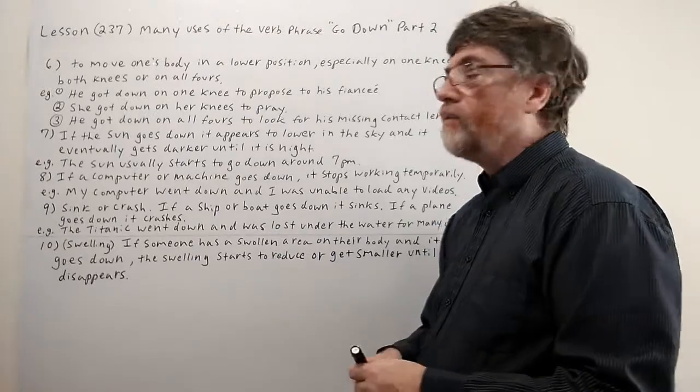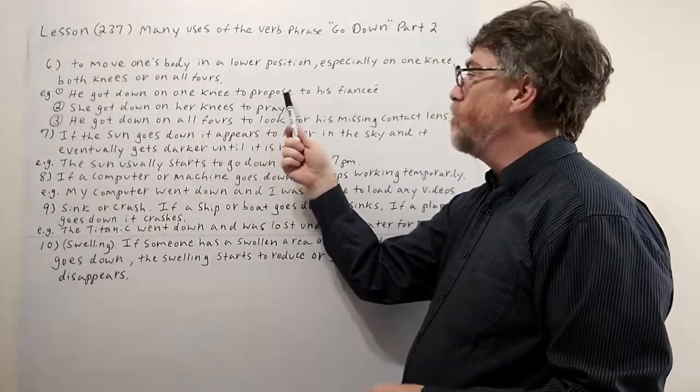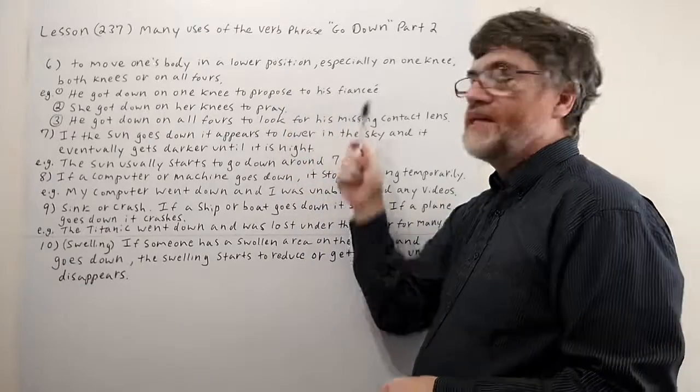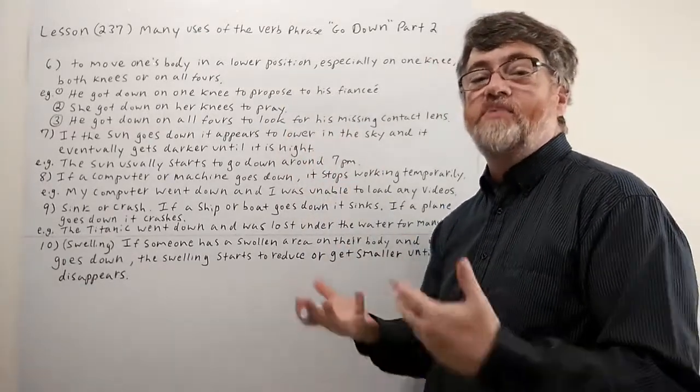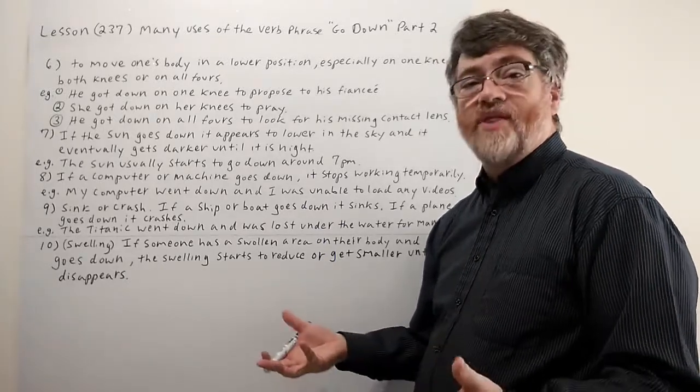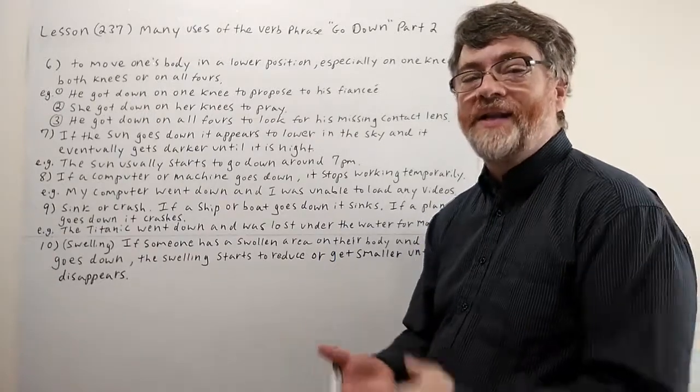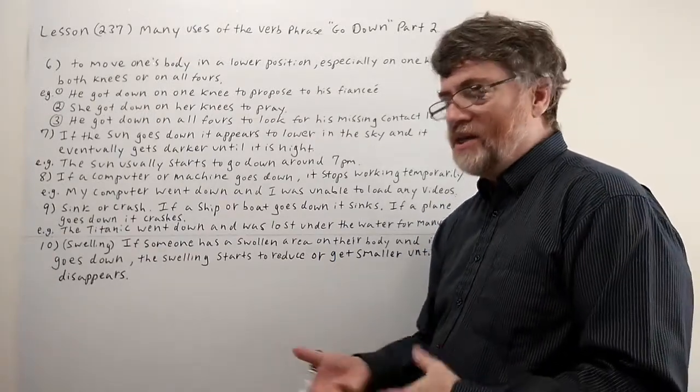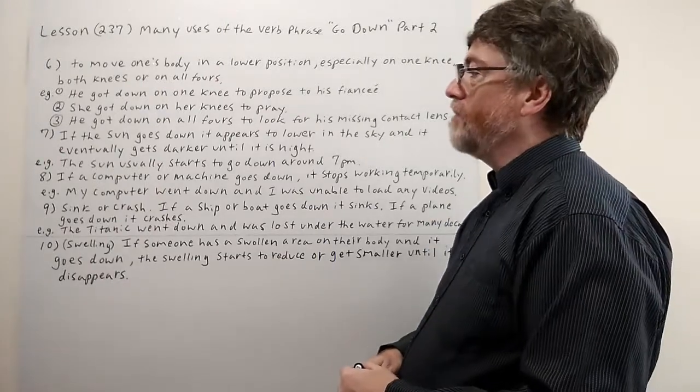Let's look at the first example. He got down on one knee to propose to his fiancée. We see this in the movies all the time. This is a traditional way to propose. You might get down on one knee for other reasons too, maybe to tie your shoes, for example.